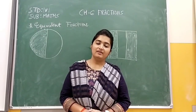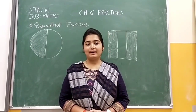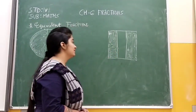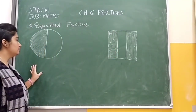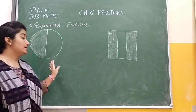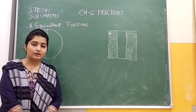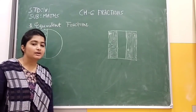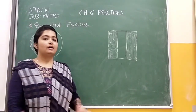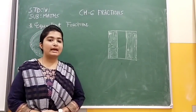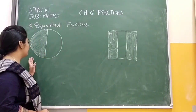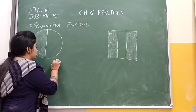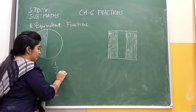Hello students, today we will learn about our next topic, that is equivalent fractions. Let us see the figures. Here I have taken one circle and one square. You can see that one part of the circle is filled and two parts of the square are filled. We have discussed about if we are taking half part, how can we represent it? We can represent it by one upon two.